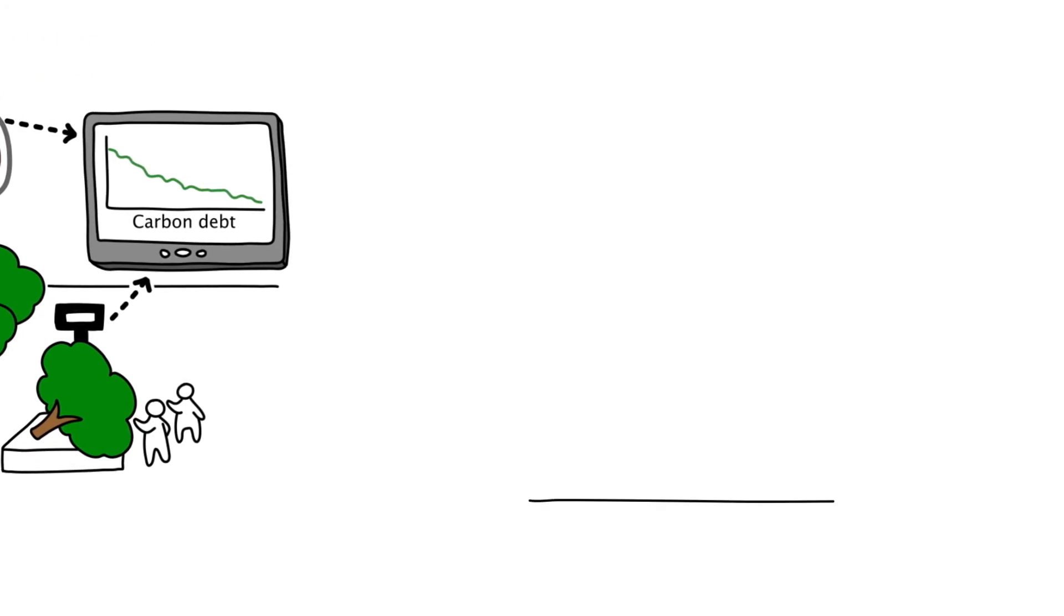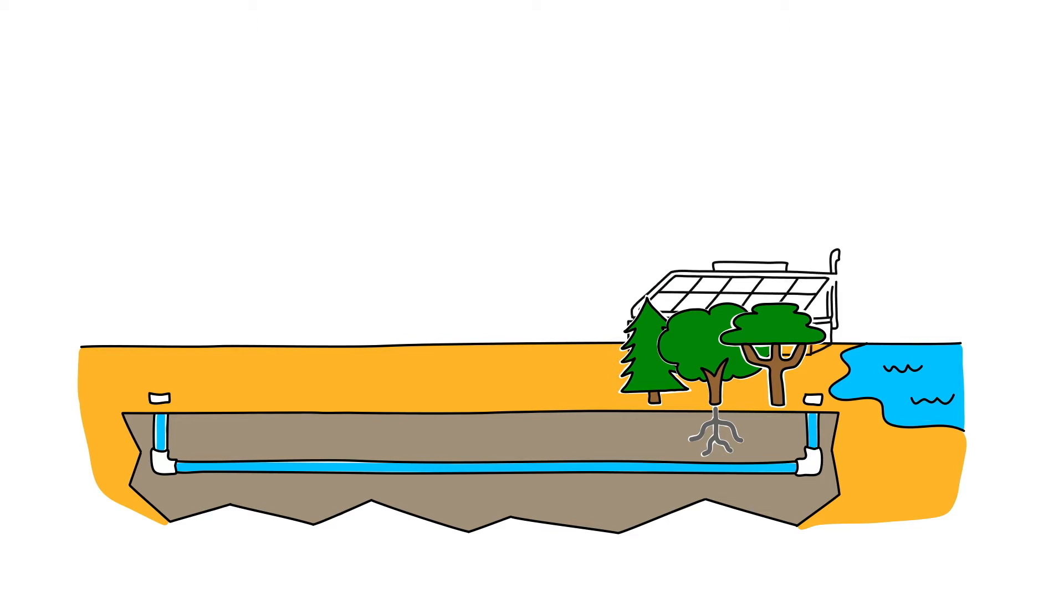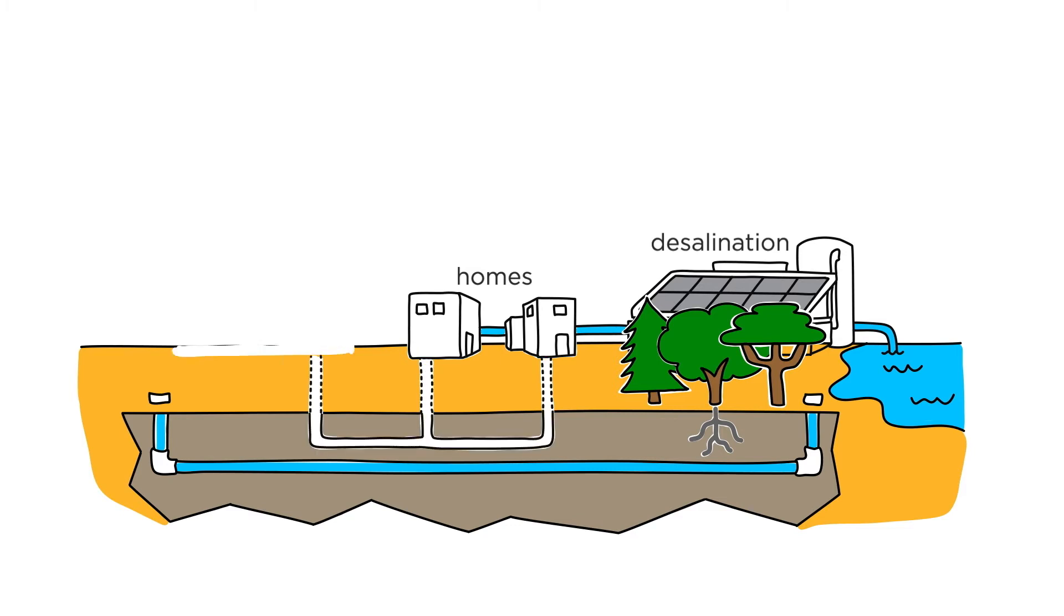2. In desert or semi-desert areas, carbon farming can be achieved by producing a well-functioning irrigation system combined with suitable soil improvement. Seawater that has been desalinated using solar power is used as drinking water, and then the wastewater is recycled to irrigate a plantation.